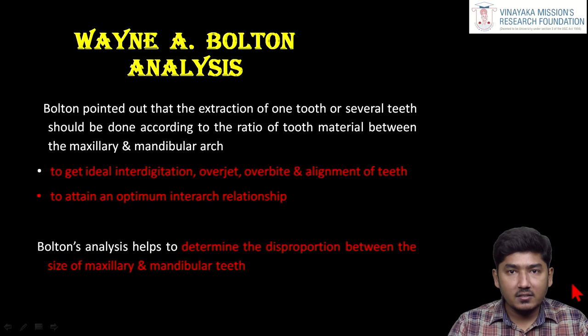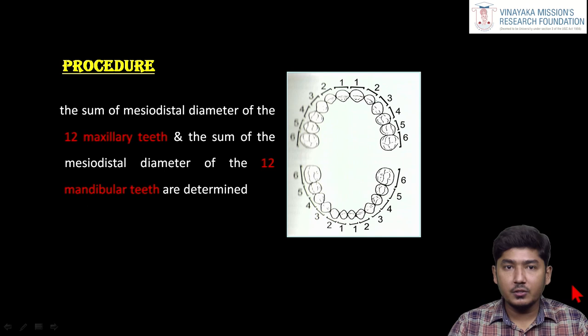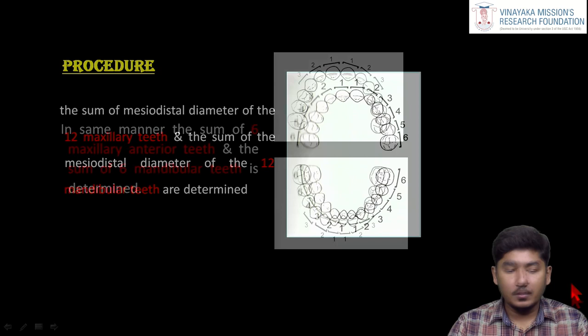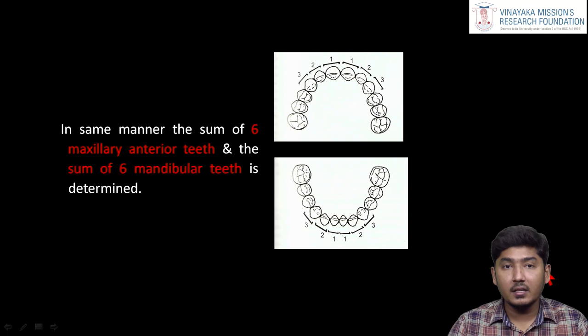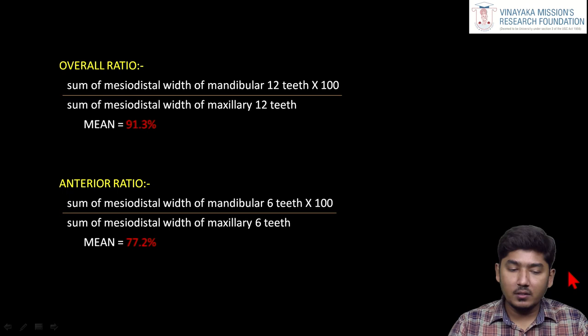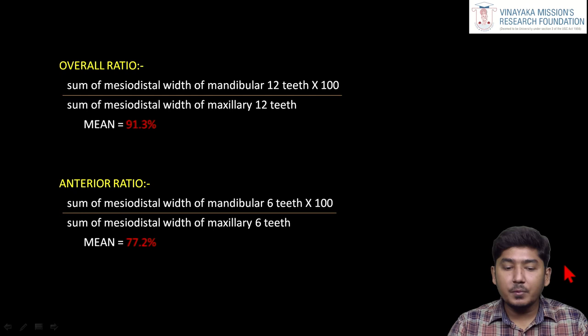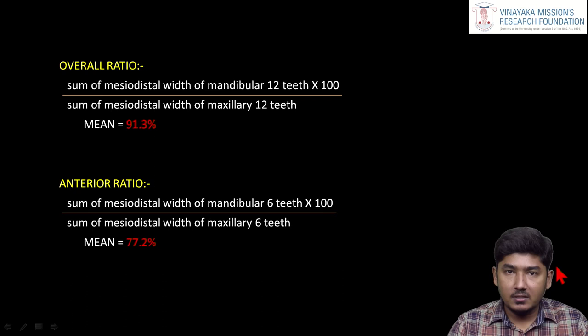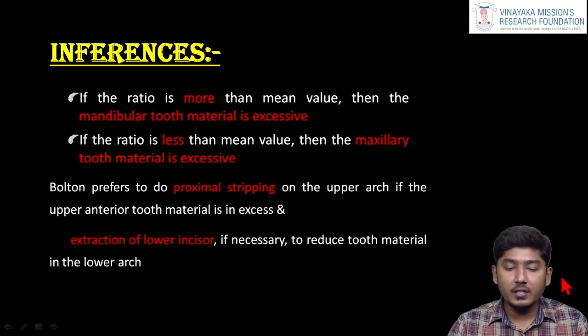Next is Bolton analysis. This is used to determine the relationship between the tooth material among the maxillary and mandibular arches. There are two types: the overall Bolton ratio and the anterior Bolton ratio. For the overall ratio, they measure the mesiodistal diameter of the 12 maxillary teeth, that is, from first molar to first molar. For the anterior ratio, they measure the sum of the incisors and canines, that is, from canine to canine. The overall ratio is: sum of mesiodistal width of mandibular 12 × 100 / sum of mesiodistal width of maxillary 12. The anterior ratio is: sum of mesiodistal width of mandibular 6 × 100 / sum of mesiodistal width of maxillary 6.